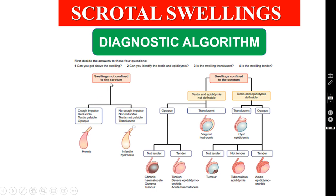Suppose the swelling is not confined to the scrotum, but there is no cough impulse, the swelling is not reducible, testis is not palpable separately, and the swelling is transilluminant — then we are dealing with infantile hydrocele, where we won't get above the swelling because the hydrocele will extend up to the internal ring level.